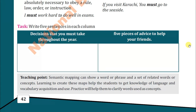Now for the second column: five pieces of advice to help your friend. For example: 'If you want to take rest, you must switch off the lights,' and 'If you want peace of mind, you must help other people.' In this way, write five sentences for the second column.